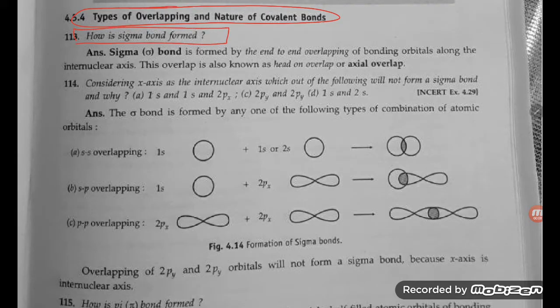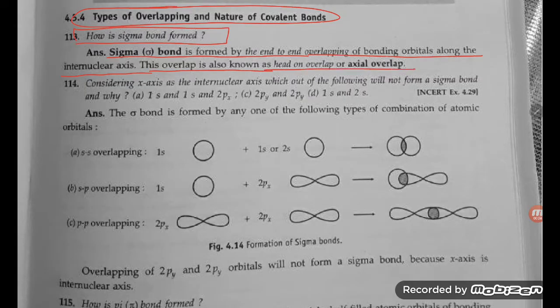How is a sigma bond formed? A sigma bond is formed by head-to-head overlapping. Sigma bond is formed by end-to-end overlapping of the bonding orbitals along the internuclear axis. This overlapping is also known as head-to-head overlapping.